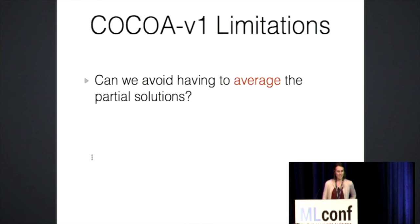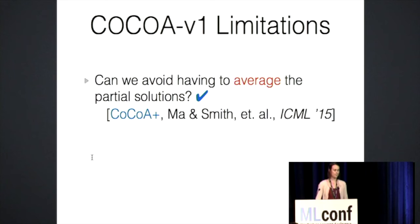The first limitation was this idea of having to average things on the master. That seems sort of arbitrary. You may wonder if you could do something better than that. For example, if you could add the updates directly together. And in follow-up work, we found that you could actually do that. And the way that we were able to do that is basically we modified the sub-problem that we're solving locally to allow you to make more aggressive updates on the master. And doing this gave us stronger convergence, both theoretically and in practice. So this was follow-up work at ICML last summer.